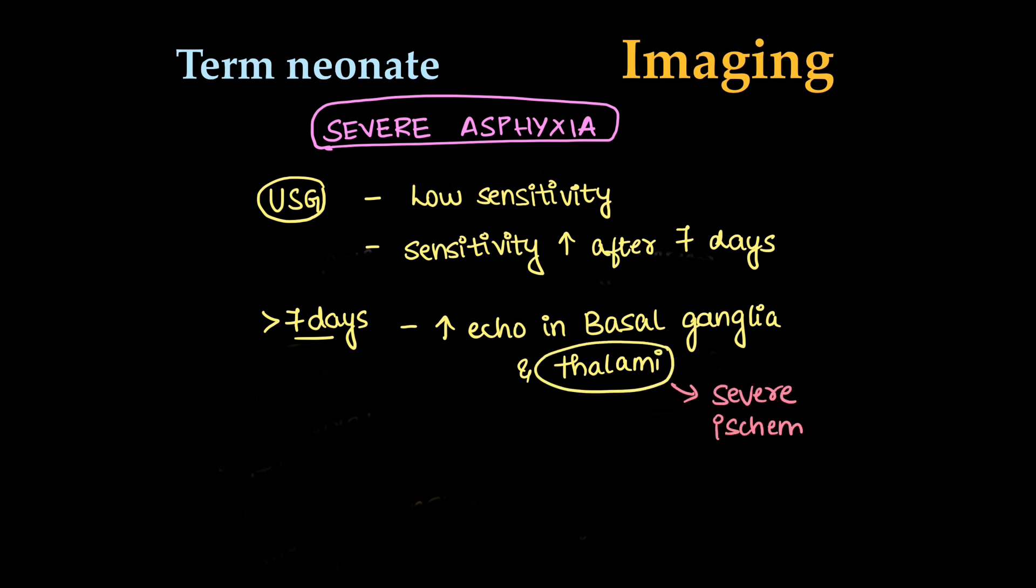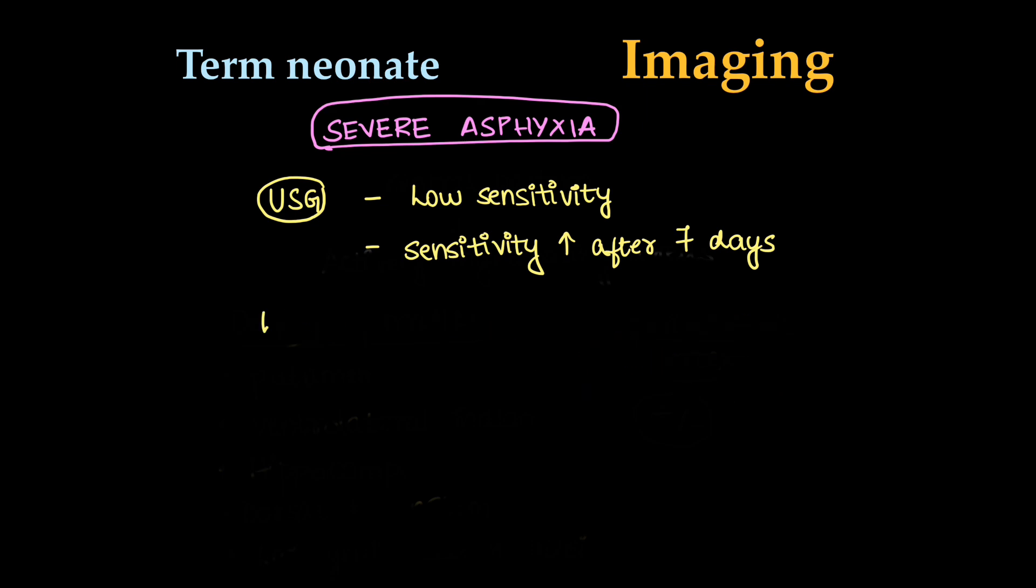After 7 days, there will be increased echogenicity in basal ganglia and thalamus. If thalamus is involved, that shows severe ischemia. There will be reduced resistive index in anterior cerebral artery and middle cerebral artery. In late stages, when we follow up, we can see atrophic changes with prominent ventricles and prominent extra-axial CSF spaces indicating permanent damage to neurons.